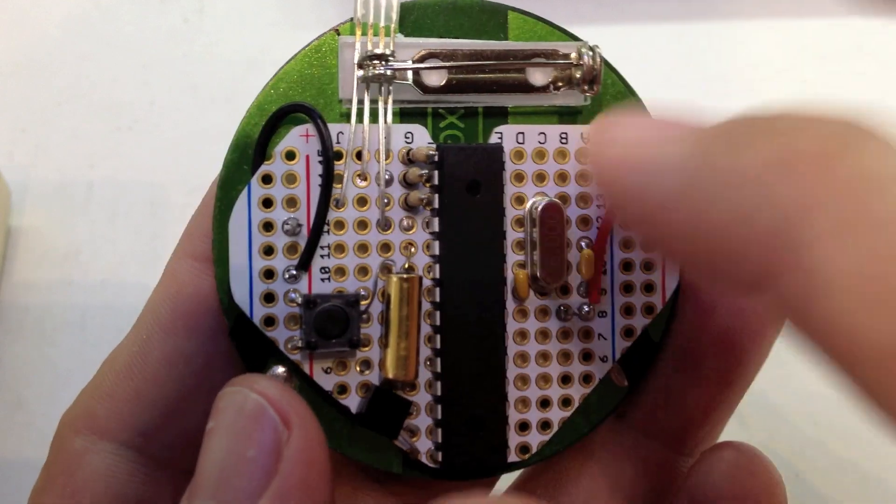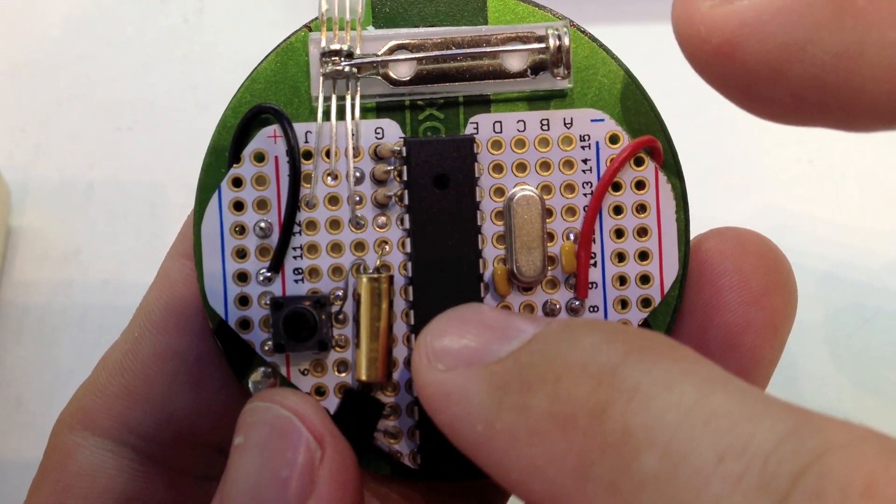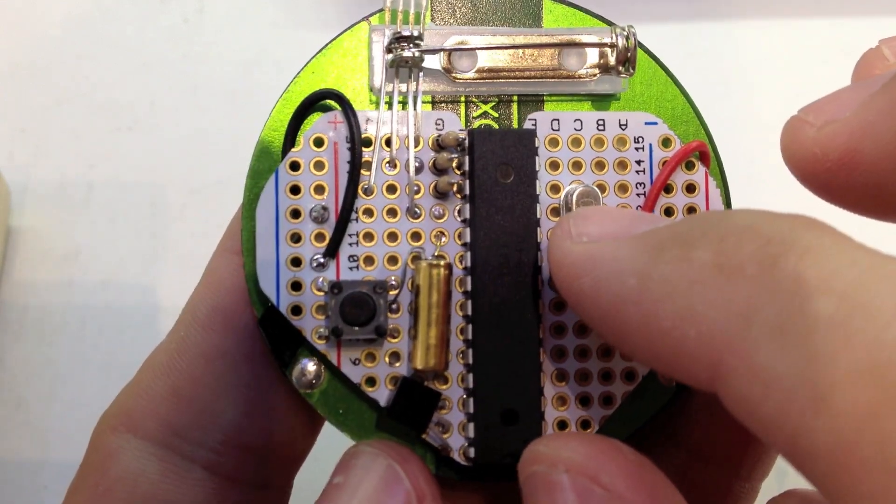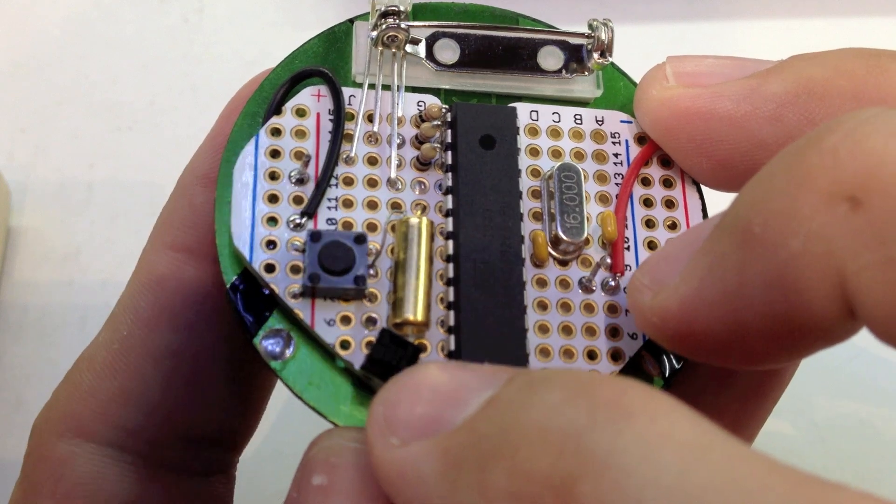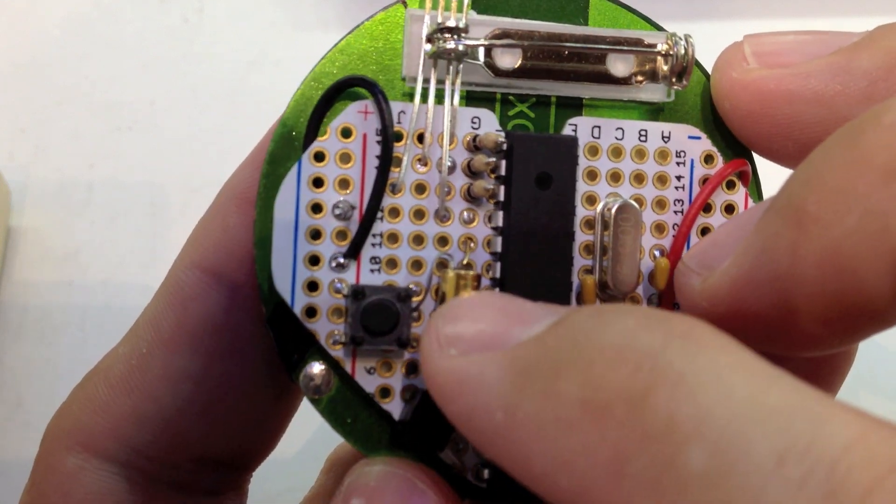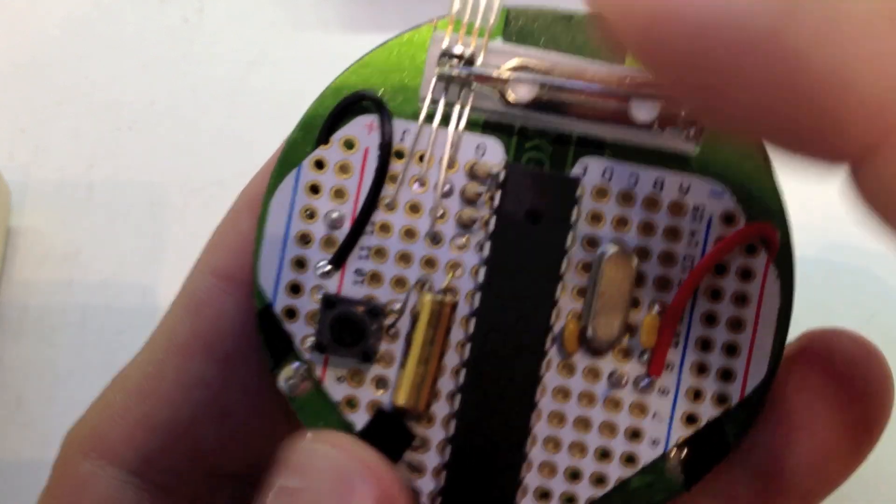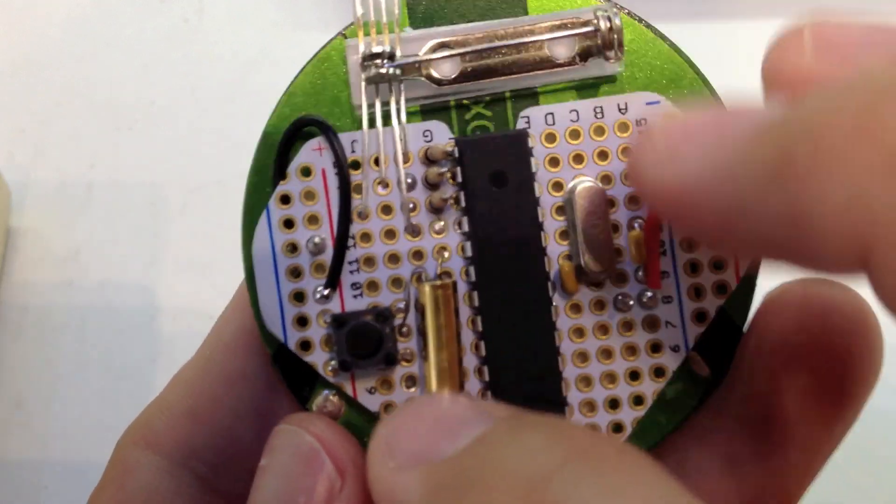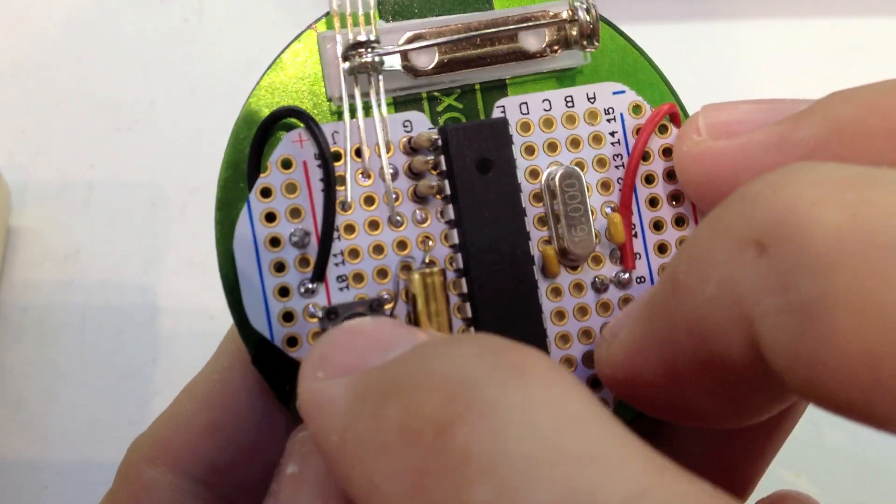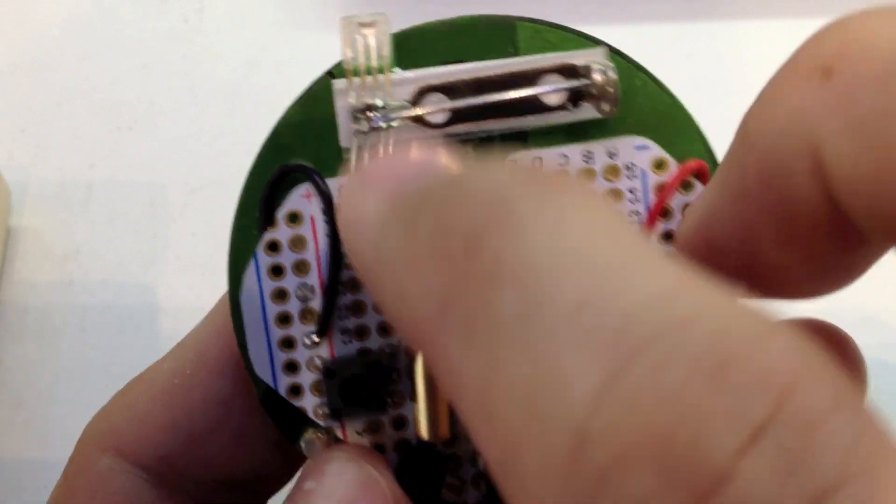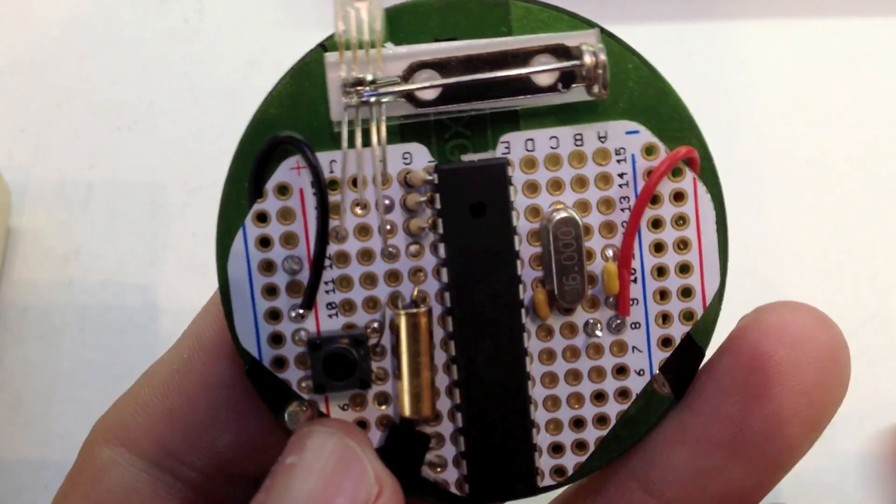So that's the board. We have a 328 on here and a crystal caps to run it. And then we have a TMP36 temperature sensor down here. We have a poor man's accelerometer or a tilt switch. That's a little switch. You can hear the little ball in it. We have a tactical, just a little push button switch. And then we have an RGB LED and the resistors so we don't overdrive it.